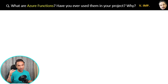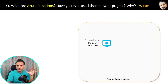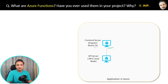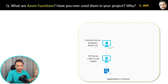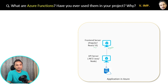Let's first understand with the help of an example. Suppose you and your development team have created a web application inside Azure. You have the front end, which can be in Angular, React, or JavaScript. The front end passes requests to the API server, which can be in .NET, Java, or Node. The back end then gets data from the database. These front end and back end components can be inside virtual machines or in Azure App Service.